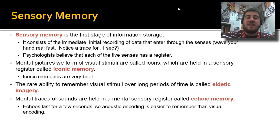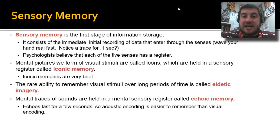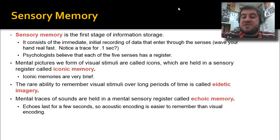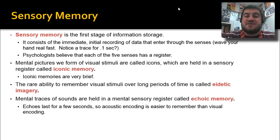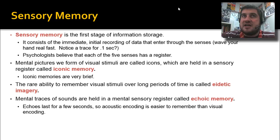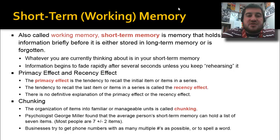The mental pictures we store are called icons, and those are held in a sensory registry called iconic memory — iconic memories are very brief. The rare ability to remember visual stimuli over long periods of time is called eidetic memory. Mental traces of sounds in your ear are held in a sensory register called echoic memory, and those actually last for a few seconds. Acoustic encoding is easier to remember than visual encoding, so if someone is talking to you and you say 'what did you say?', if you wait a second you'll be able to remember — you heard it and it's stored, you just haven't processed it yet.